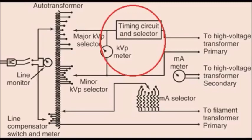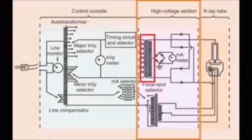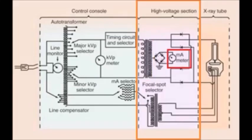At the high-voltage step-up transformer, voltage is increased by a factor of about 500 to kilovolts and amperage is reduced. Unlike the auto transformer, the step-up transformer operates on mutual induction. On the secondary side of the step-up transformer is the amp meter, which reads current after the exposure.